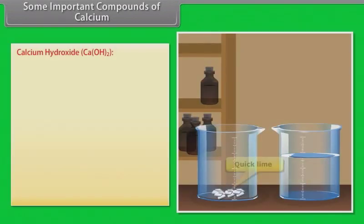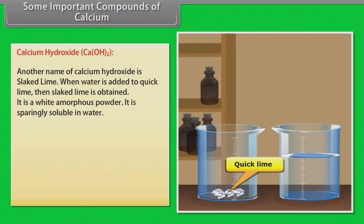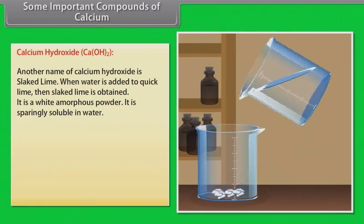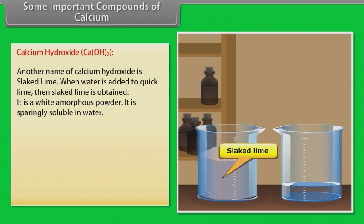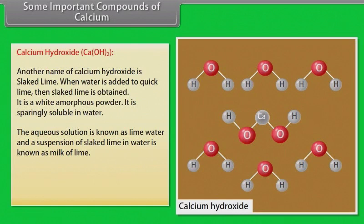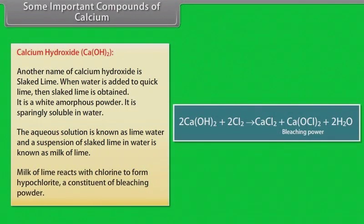Calcium hydroxide. Another name of calcium hydroxide is slaked lime. When water is added to quick lime, then slaked lime is obtained. It is a white amorphous powder. It is sparingly soluble in water. The aqueous solution is known as lime water and a suspension of slaked lime in water is known as milk of lime. Milk of lime reacts with chlorine to form hypochlorite, a constituent of bleaching powder.